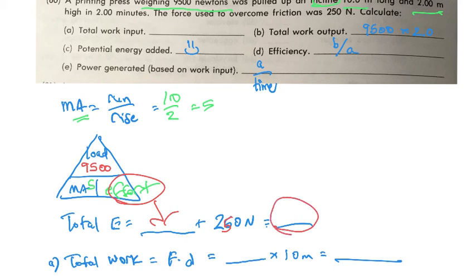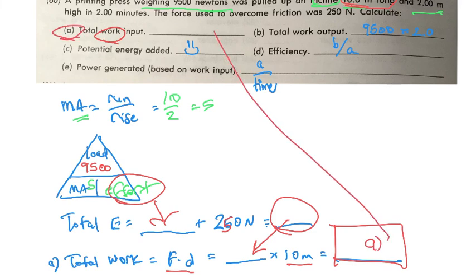So we're now still not done because we are looking for the total work input. Remember what work is? Work is force times distance. So how long are we pushing with this amount of force? We're pushing or pulling it up a 10 meter long ramp. So we have to apply that force that you found here for 10 meters, and then that will give us the total work. So I'm going to call that 'a' because that's what is up here. Okay, that's the total work input.